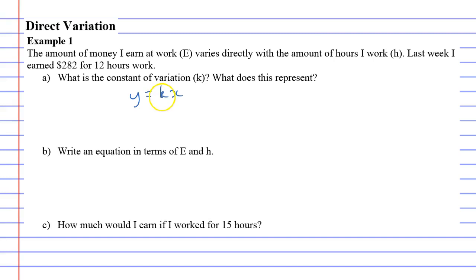Where K represents the constant of variation. So what we need to do is the Y and the X have to represent the E and the H. We need to figure out which one's which. The way we do it is we try and figure out which one's the independent variable and which one's the dependent one.